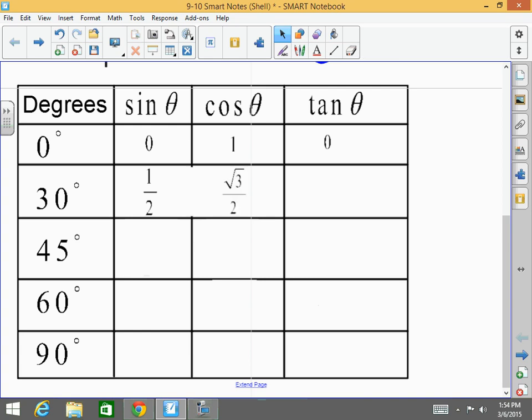The cosine of 30 is square root of 3 over 2. The tangent of 30 is square root of 3 over 3. 45, since it's an isosceles triangle, both the sine and the cosine of 45 are both square root of 2 over square root of 2. So that's a good help.